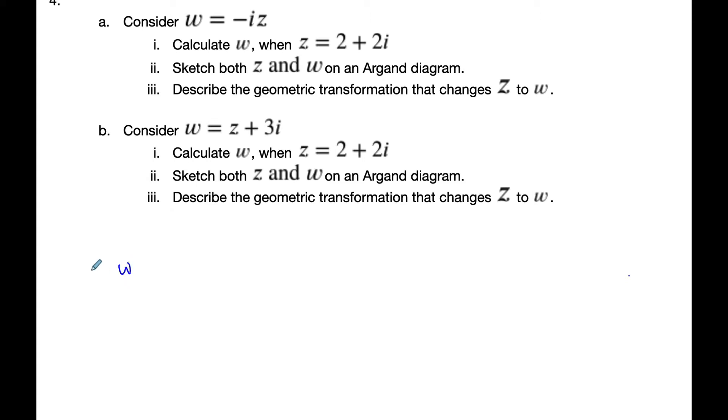So if I simply do for part i, w is equal to negative i times 2 plus 2i, which I get here. If I distribute it, I get negative 2i. Distribute this, I get negative 2i squared, which is a positive 2.